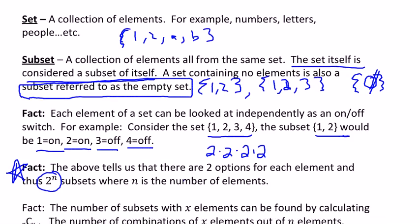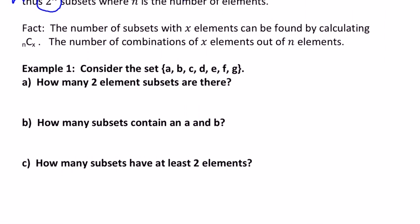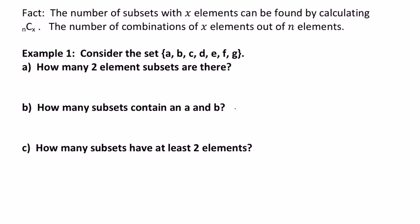If you want to get more specific about subsets, you could ask: how many subsets have exactly x elements? This is where combinations come into play. Let's say we wanted the number of subsets of that last set that have two elements — we just pick two of them to be on, which picks two to be off. So for four elements and wanting two of them, four choose two would be the number of two-element subsets.